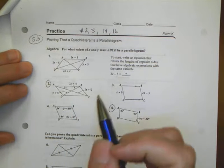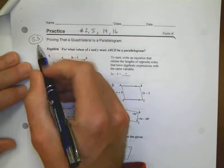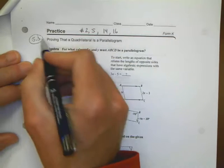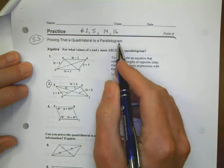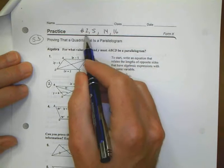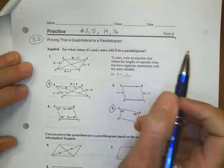All right, here we go. We have Lesson 5.3, which is from Math 2, Unit 5 Lesson 3, proving that a quadrilateral is a parallelogram. So this is some homework help for you guys, Numbers 2, 5, 14, and 16.